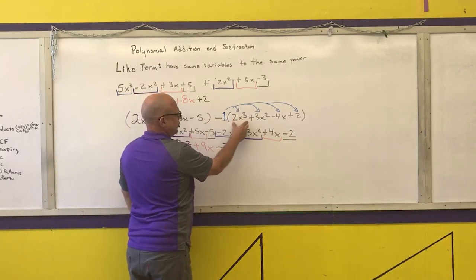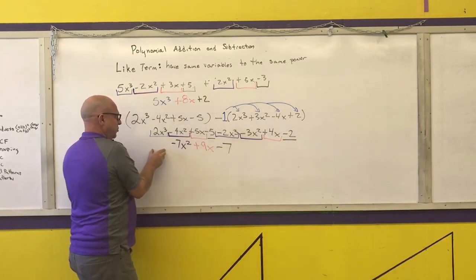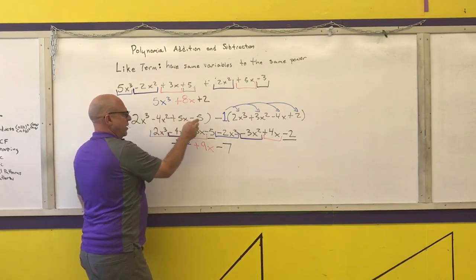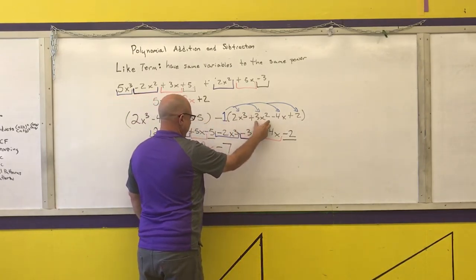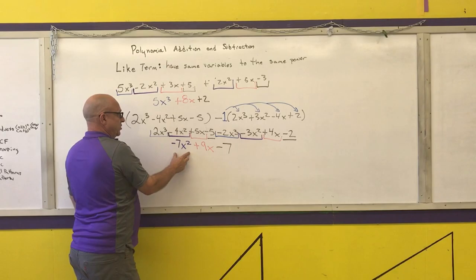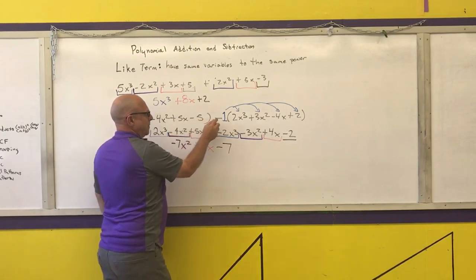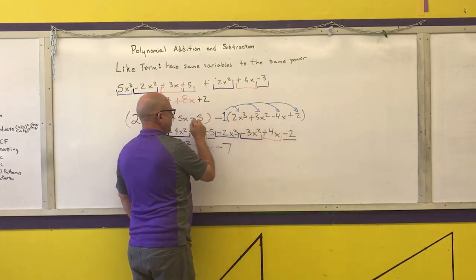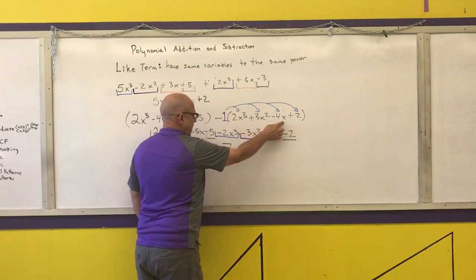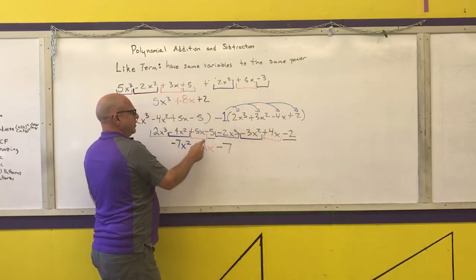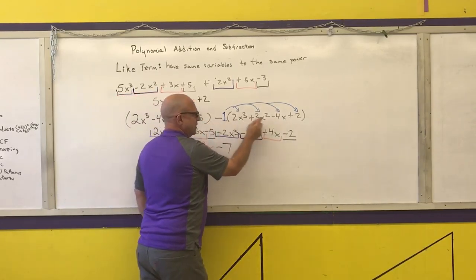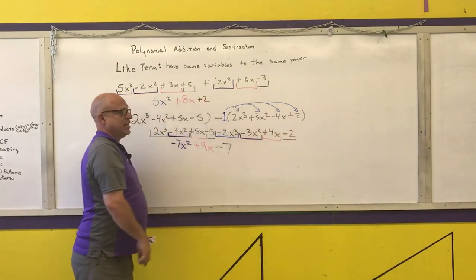2x cubed minus 2x cubed is 0x cubed. Minus 4x squared minus 3x squared is minus 7x squared. 5x minus a minus 4x is 5x plus 4x, which is 9x. And negative 5 minus the 2 is negative 7.